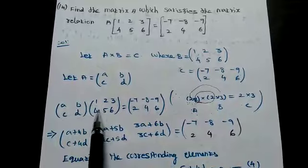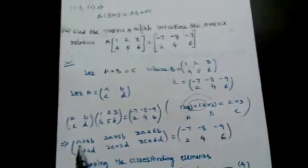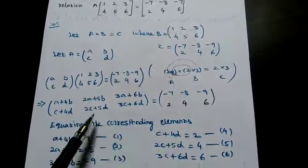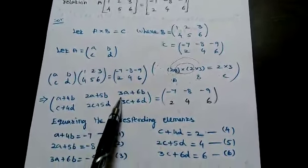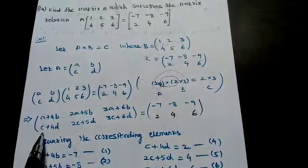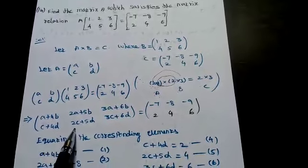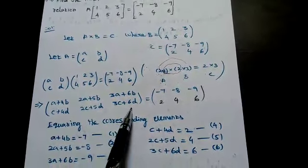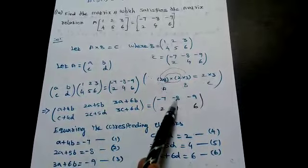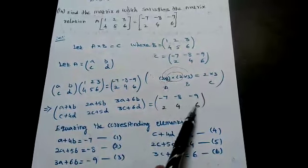The left side is 2×2 multiplied by 2×3, giving a 2×3 result. The first row gives: (a+4b), (2a+5b), (3a+6b). The second row gives: (c+4d), (2c+5d), (3c+6d). This equals [[-7, -8, -9], [2, 4, 6]].